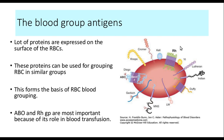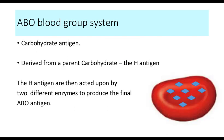Of all the different proteins or carbohydrates expressed on the surface of the RBC, the ABO and the RH groups are very important because they have a role in blood transfusion. Now let's discuss the ABO blood group system. The ABO blood group system is basically made of carbohydrates — it consists of carbohydrate antigens.